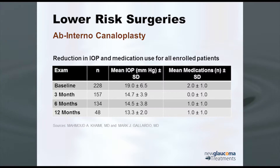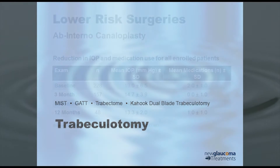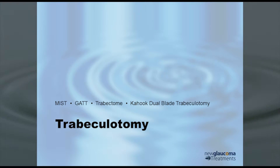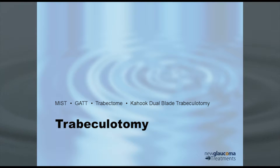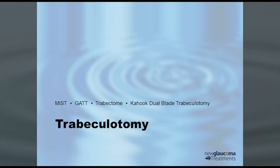What else can we do? Well, one thing we can do is dilate the canal. The other thing we can do is say, well, if the trabecular meshwork is the primary area of restriction, why don't we just rip it out or tear it open?